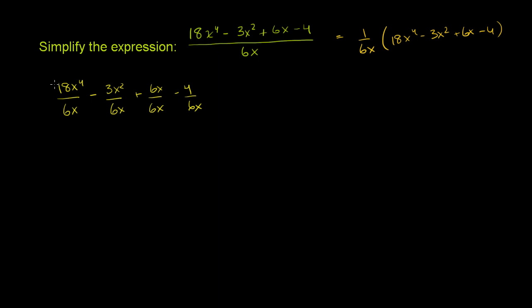This first one, we can take the coefficients and divide them. 18 divided by 6 is 3. And then you have x to the 4th divided by x to the—well, they don't tell us. But if it's just an x, that's the same thing as x to the first power. So it's x to the 4th divided by x to the first. That's going to be x to the 4 minus 1 power, or x to the third power.